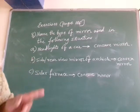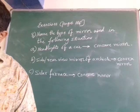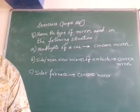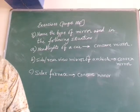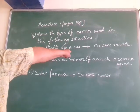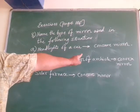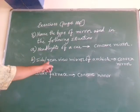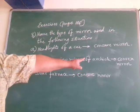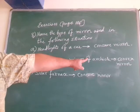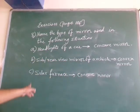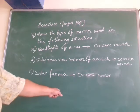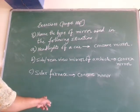Question 8: name the type of mirror used in the following situations. A — headlights of a car: concave mirror is used to focus light and get a parallel beam. B — side or rear-view mirror of a vehicle: convex mirror is used to get a wider field of view. C — solar furnace: concave mirror is used.